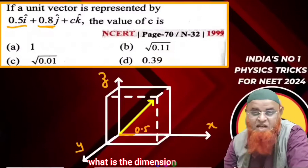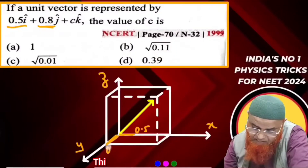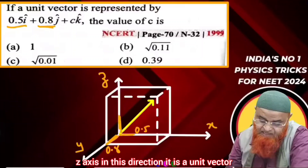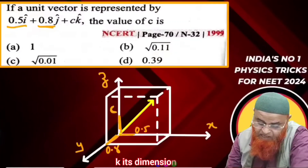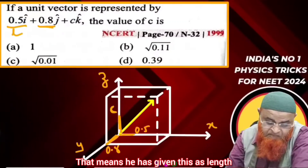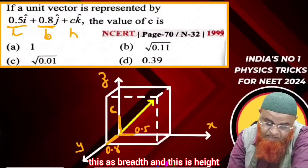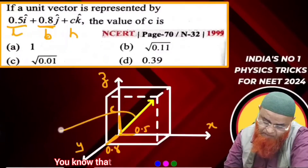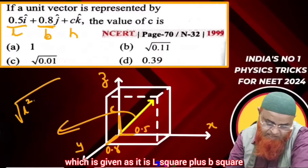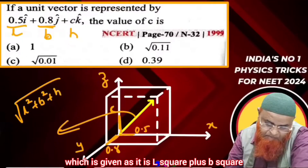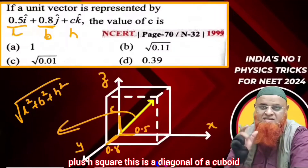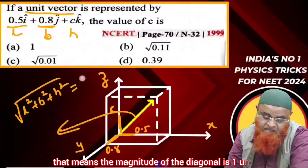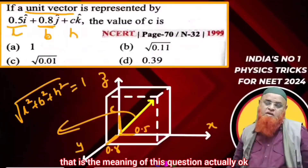Along the y-axis, the dimension given is 0.8. And along the z-axis, in this direction, it is unit vector k — its dimension is c. So he has given this as length, this as breadth, and this as height. You know that the diagonal of a cuboid is √(l² + b² + h²). That is a diagonal of a cuboid, and it is a unit vector, meaning the magnitude of the diagonal is one unit.